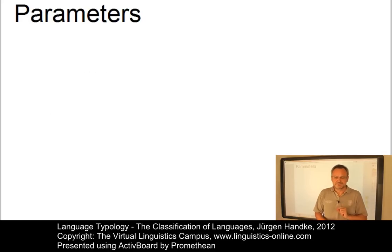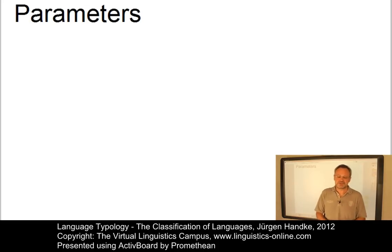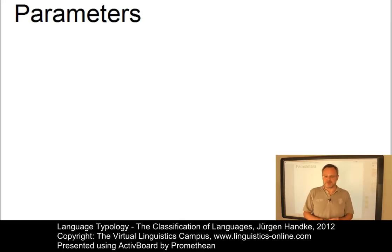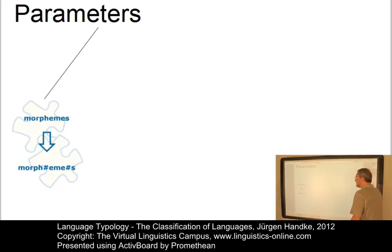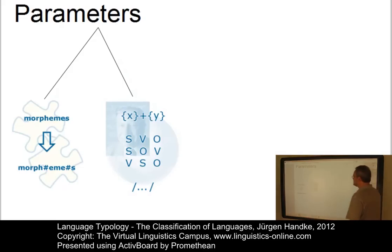However, in looking at a vast number of languages, it has turned out that there are some linguistic parameters along which languages can best be classified. For example, there is the morphological or structural parameter. Another one concerns the classification of languages in terms of its basic word order pattern.